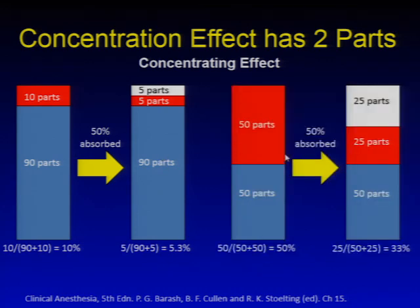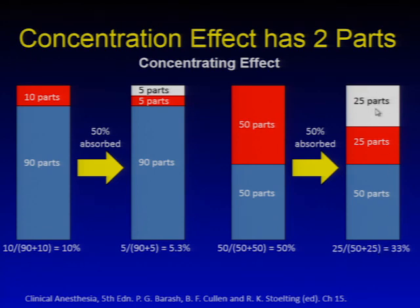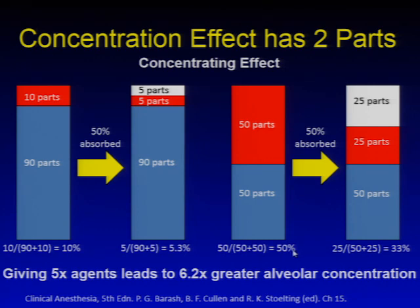Now, if we deliver that same gas at 50% and have 50% absorbed, we've moved from 50% concentration to about 33%. When we went from 10% to 50% — five times the concentration — it actually gave us a jump from 5.3% to 33%, or a 6.2% greater concentration in the alveoli. This is one way nitrous ends up being a little bit faster: it gets absorbed at such a high amount that it ends up getting concentrated within the lungs. This is the concentrating effect of the concentration effect.